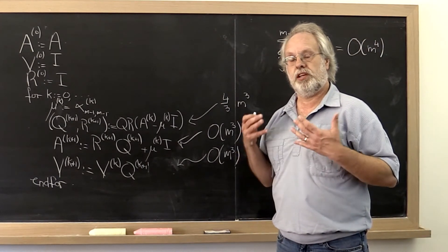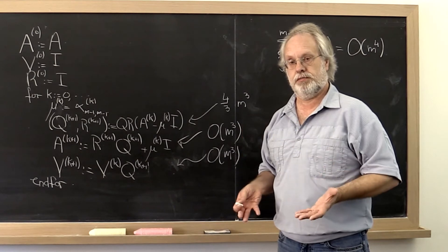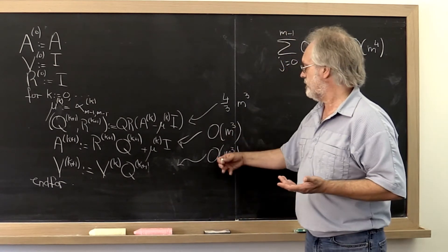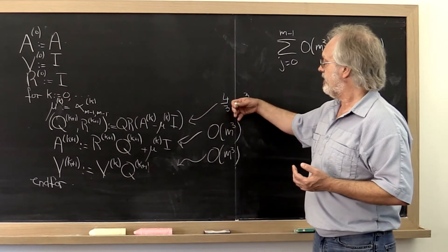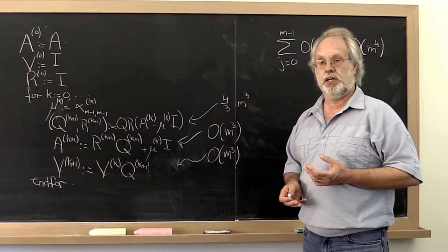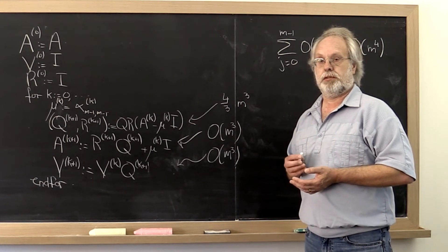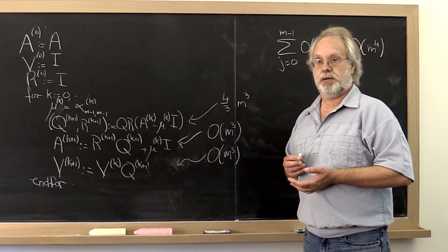Order m to the fourth is unacceptably expensive. So no matter what the details of these two parts are, even if these two parts were free, the fact that this is four thirds m cubed would still make this algorithm unacceptably expensive.